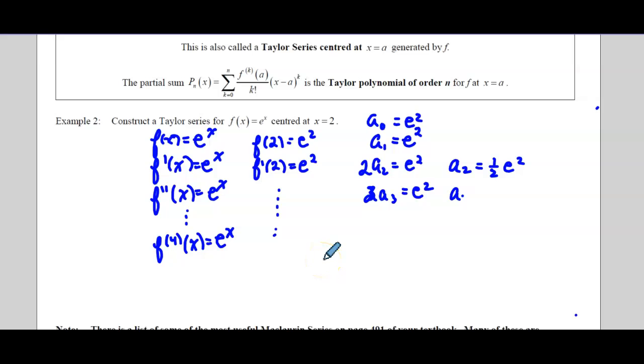And then here, I'm just going to delete this. It's going to be 6a_3. So a_3 equals one sixth e². Okay. And we can keep on going.